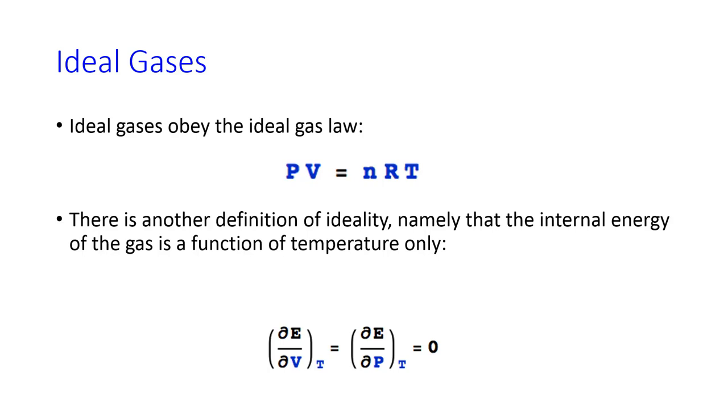So for ideal gases, we know that they obey the ideal gas law as their equation of state. But another definition of an ideal gas is that the internal energy of that gas is a function of temperature only. In other words, the partial derivative of the internal energy with respect to volume or with respect to pressure is zero at constant temperature.